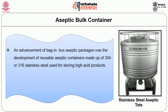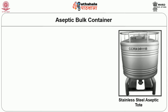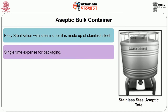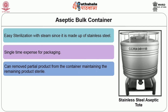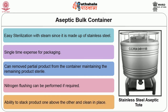Aseptic bulk containers are an advancement of bag-in-box aseptic packages. The development of reusable aseptic containers made up of 304 or 316 stainless steel is used for storing high-acid products. These types of aseptic bulk containers are termed aseptic totes. The container sizes range from 200 to 300 gallons. This system has a number of merits: easy sterilization with steam since it is made up of stainless steel, single-time expense for packaging, ability to remove partial product from the container while maintaining the remaining product sterile, nitrogen flushing if required, and ability to stack products one above the other with clean-in-place capability.